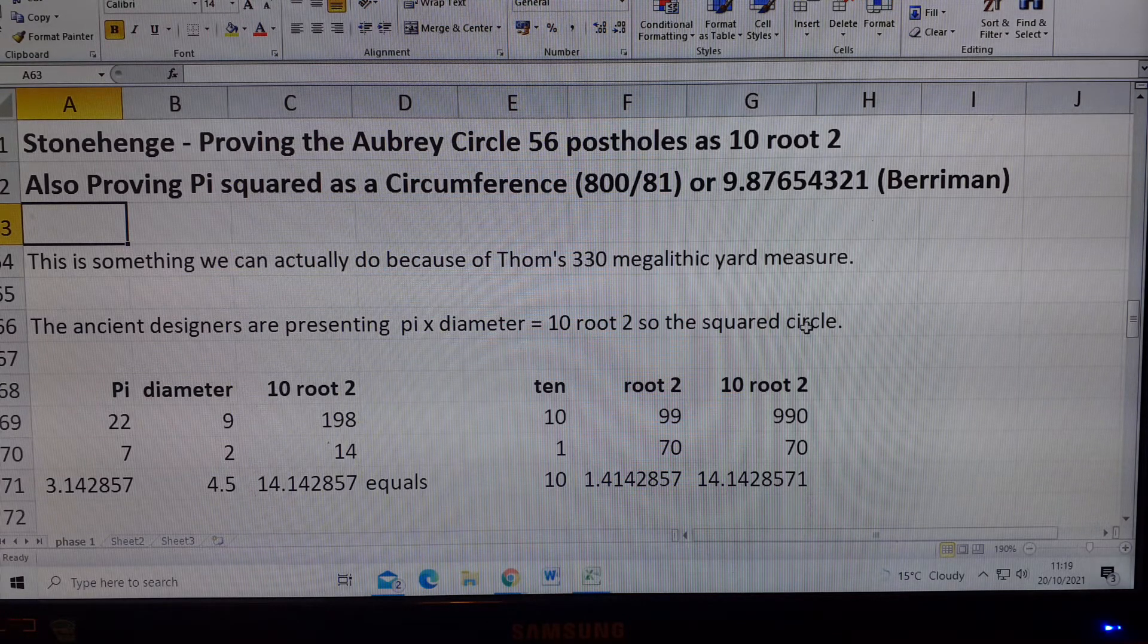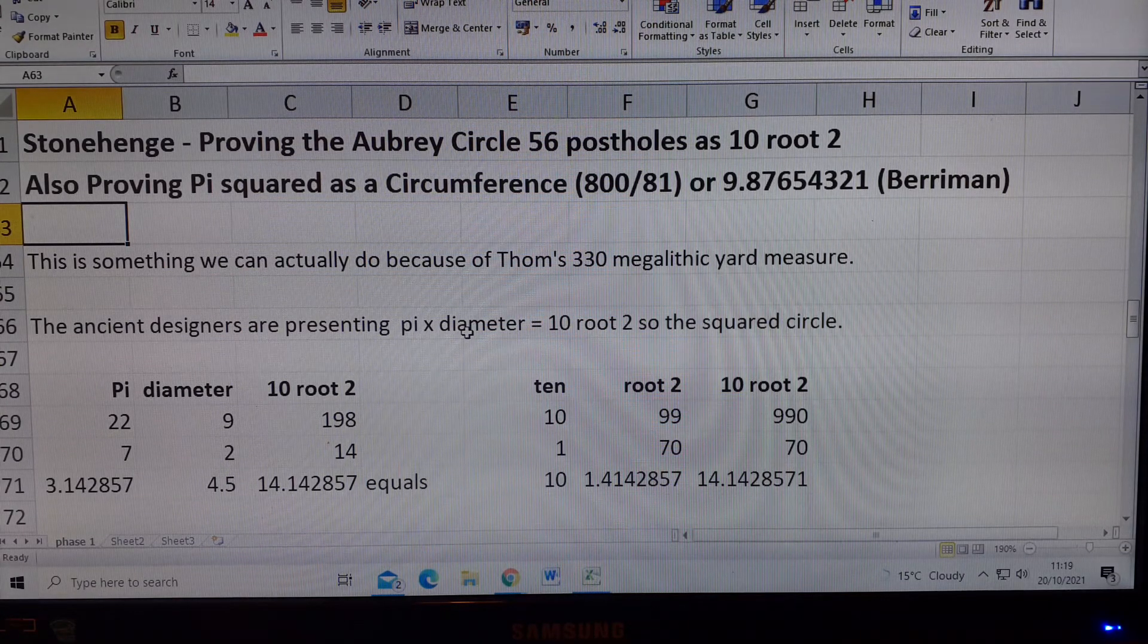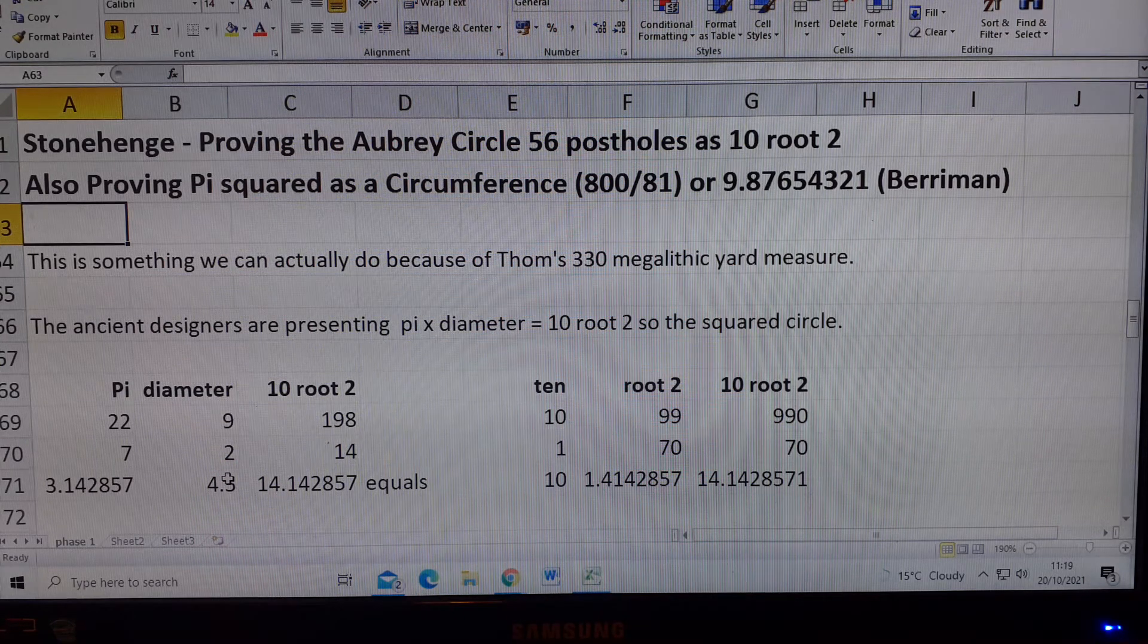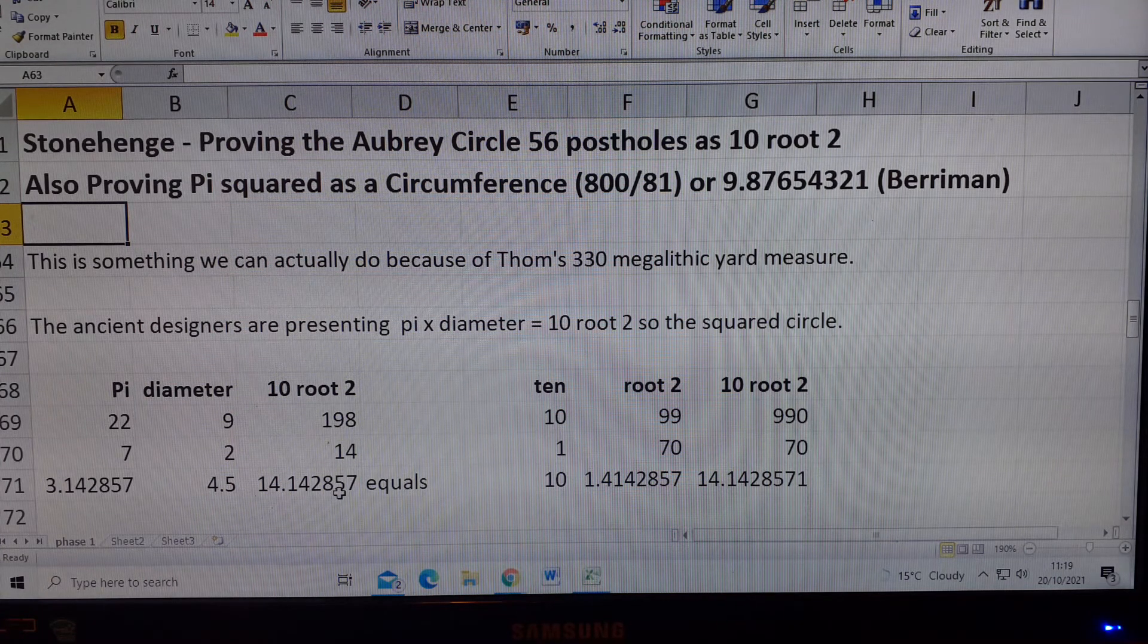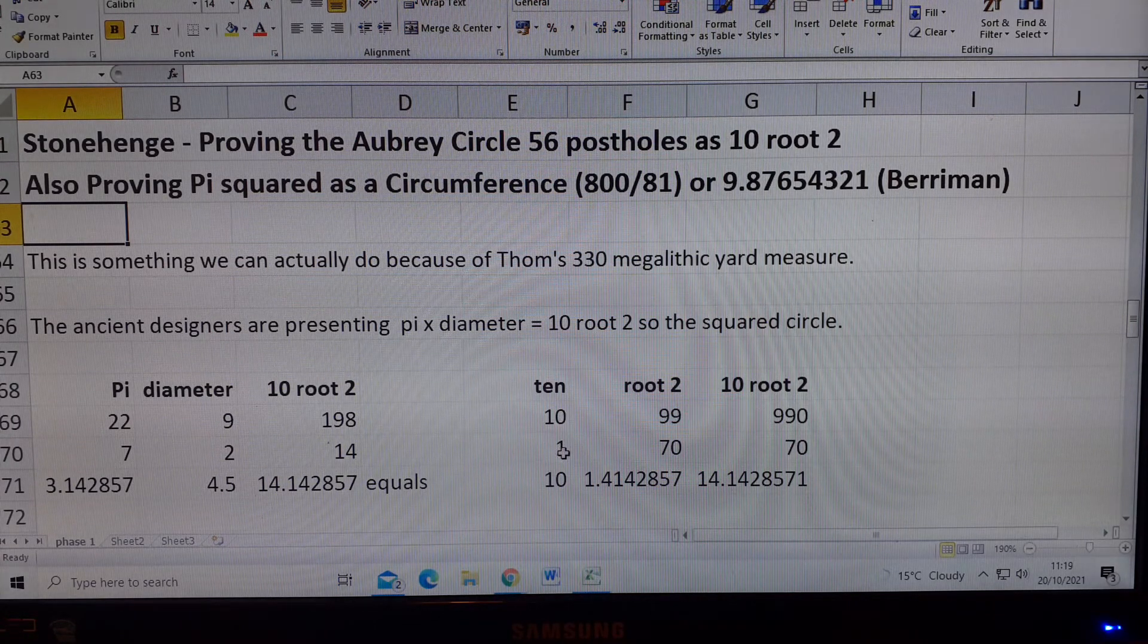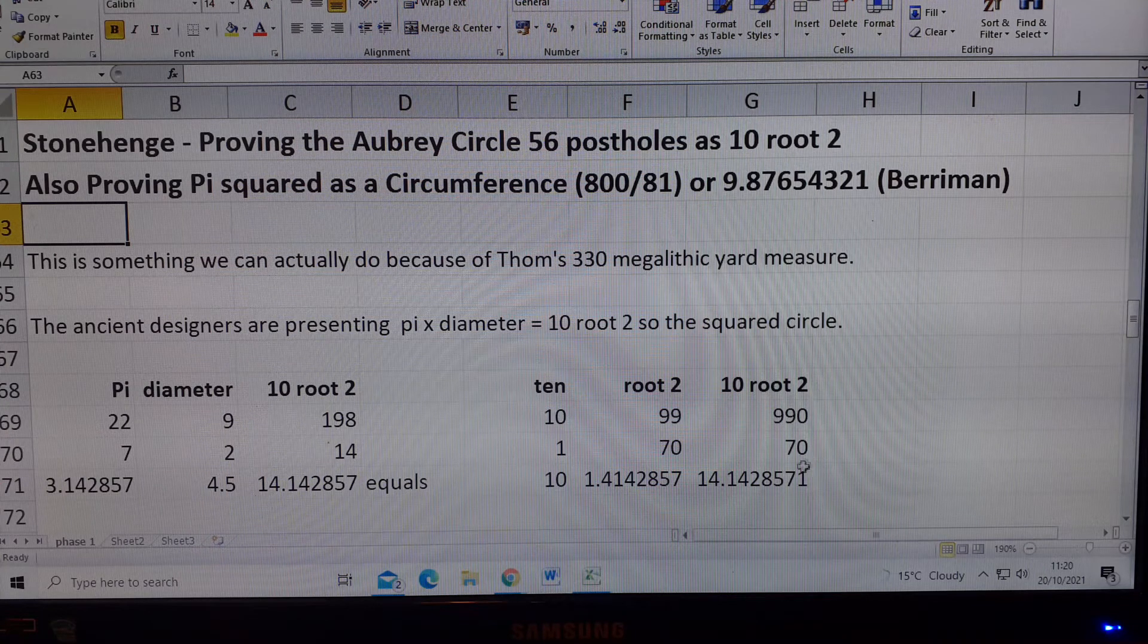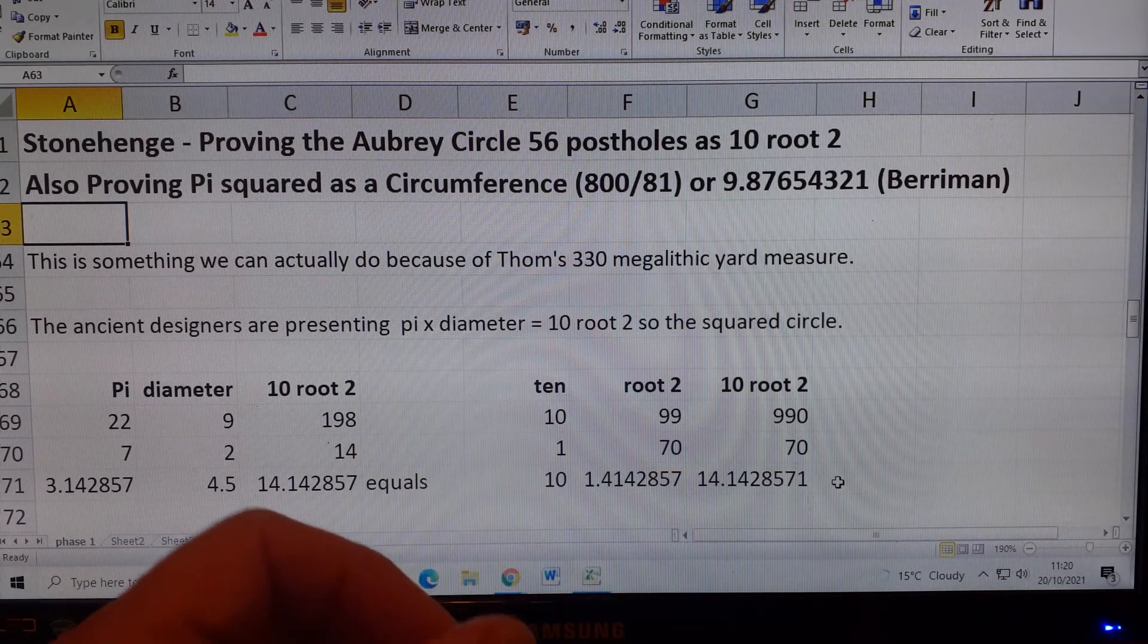The ancient designers are presenting Pi times diameter equals 10 root 2. So the squared circle, because we're using 10 root 2, we're squaring the circle. 10 root 2 is the same as Pi times diameter. That's the circle. The Pi is 22 over 7, which is that. The diameter is 9 over 2, 4.5. And 10 root 2 is 198 over 14, which is 14.142857. 10 root 2 is the same thing. 10 over 1 multiplied by 99 over 70 is 14.142857. And 10 root 2 is 990 over 70, which is the same as that. It's 14.142857. That's what they're proving.